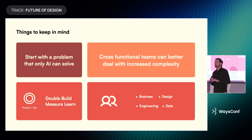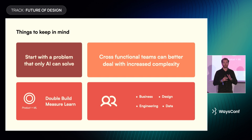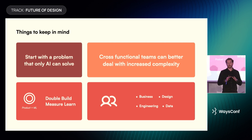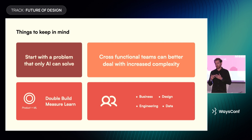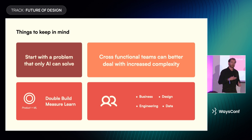The second point is a concept I termed last year: the double build-measure-learn loop. You're probably familiar with the typical build-measure-learn loop — you build a prototype or new feature, measure its impact, and iterate. You have the exact same mechanism for AI models: you train them, see how they work, and refine them to ensure they're doing what they should without biases or hallucinations.